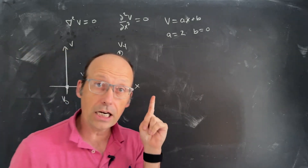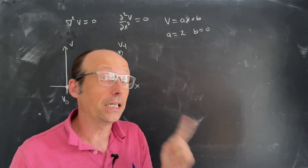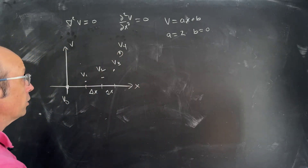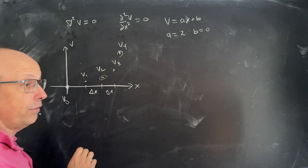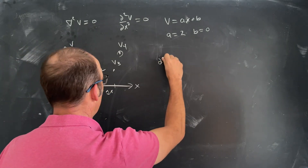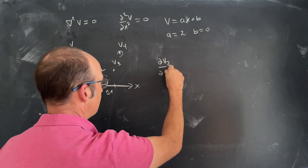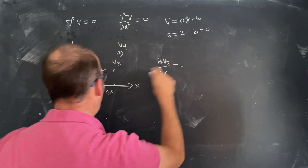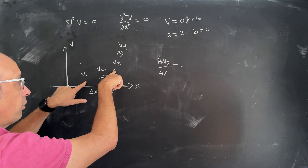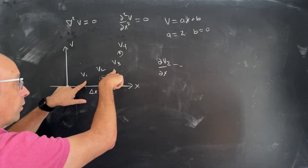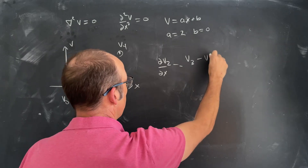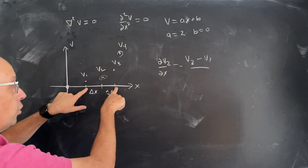How can I write the second derivative as a finite difference? Let's write the first derivative as a finite difference first. Suppose I want to find the derivative at v2. The derivative is just the slope, so I'm going to take the slope from v3 to v1. That gives me v3 minus v1 over 2 delta x.